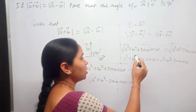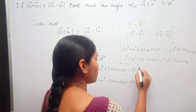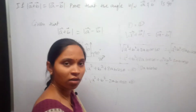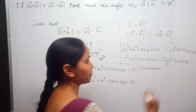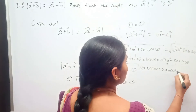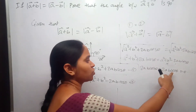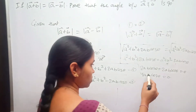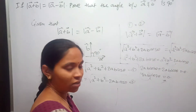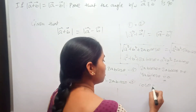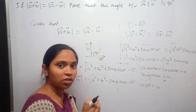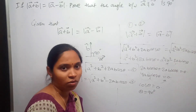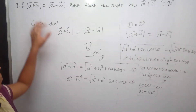We are left with 2ab cosθ, and bringing the right-hand side term to the left gives 2ab cosθ + 2ab cosθ = 0, which means 4ab cosθ = 0. Since a and b are constants, we get cosθ = 0, which means θ = 90 degrees, since cos 90° = 0.